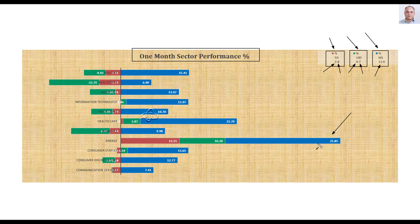Energy is one sector that was bullish — it went up across the one-month, ten-day, and five-day periods, outperforming all other sectors by far, going up by 25-plus percent in the last month. When energy was just starting to go up I used the live 360 degrees analysis to buy some energy sector stocks. All those trades resulted in very nice profit, which I shared in the traders forum using live analysis — not after knowing the result. Let me give you two of those trades to demonstrate how you could use the Q systems to buy stocks well ahead of others.